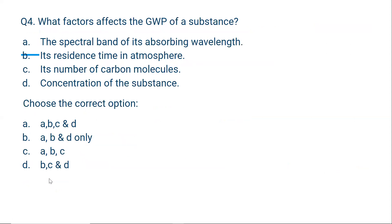Question number four: What factors affect the Global Warming Potential (GWP) of a substance? Option A: the spectral band of its absorbing wavelength — meaning the range of wavelengths the substance can absorb radiation in. Option B: its residence time in the atmosphere — how long it remains in the atmosphere, because if it settles down, it won't contribute to global warming. Option C: its number of carbon molecules — this does not matter. Option D: concentration of the substance — clearly, more of the substance means more global warming potential.